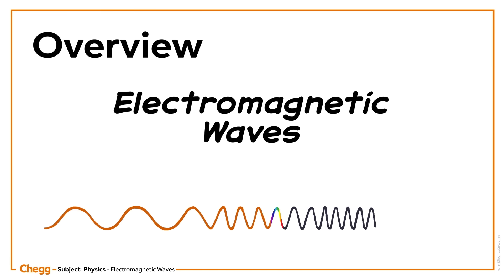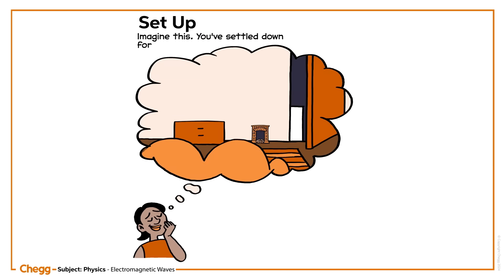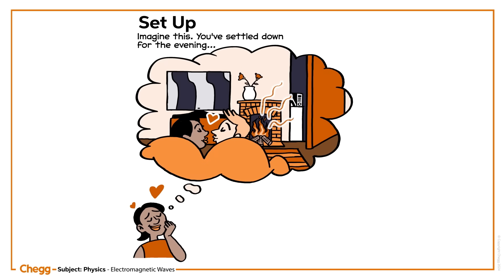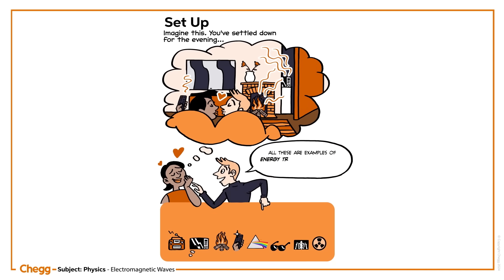In this animation, we'll consider electromagnetic waves and their common features. Imagine this: you've settled down for the evening, feeling the heat from a warm fire hit your face. With your TV remote, you flick through some potential movies. You can hear and smell popcorn popping in your microwave in the background. The fire, the TV remote, and the microwave—all these are examples of energy traveling in the form of electromagnetic waves.